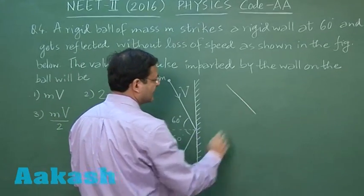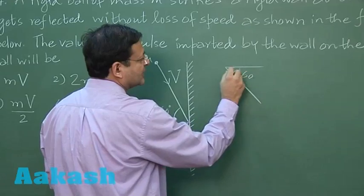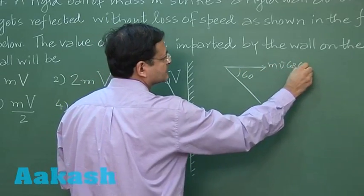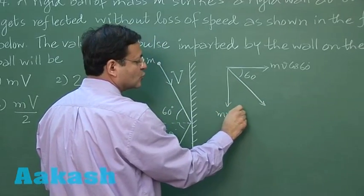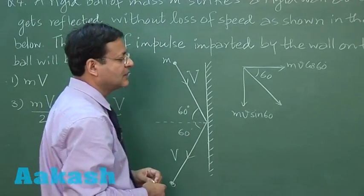You can go by the simple figure like you see this is 60 degrees. So here also you can say 60 degrees. So initially you can say M v cos 60 is here and M v sin 60 is in this direction. These are two components I have made for the initial momentum of the ball.